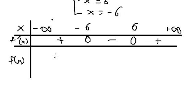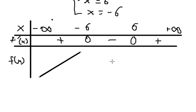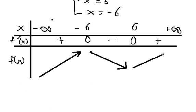Because the first derivative is positive to the left of positive six, the function is increasing there. Then it decreases because the first derivative is negative. Then later this one goes back to positive.